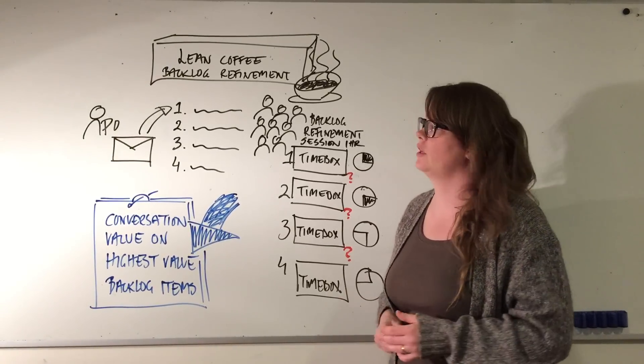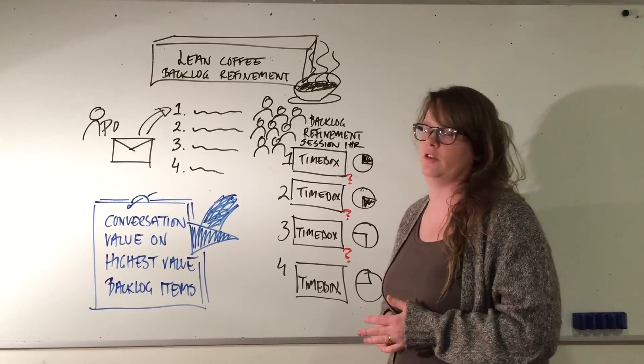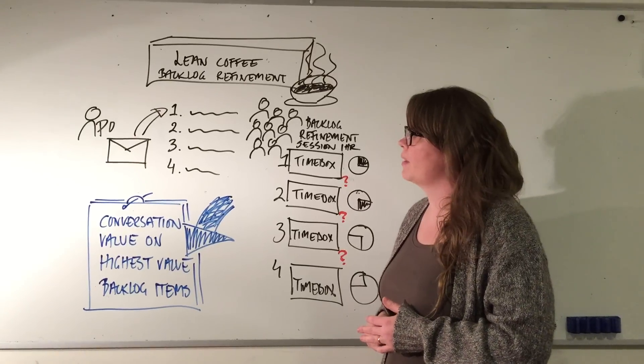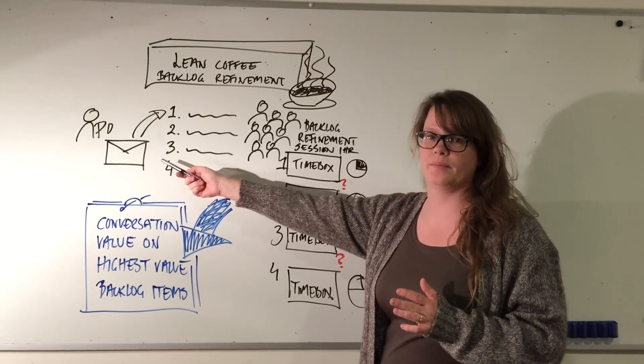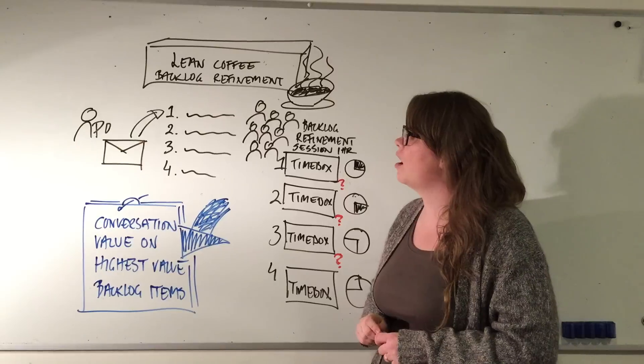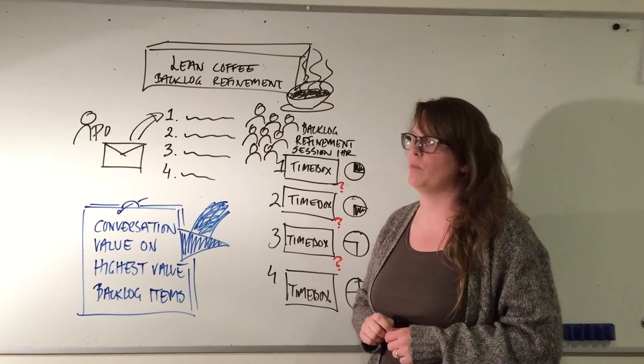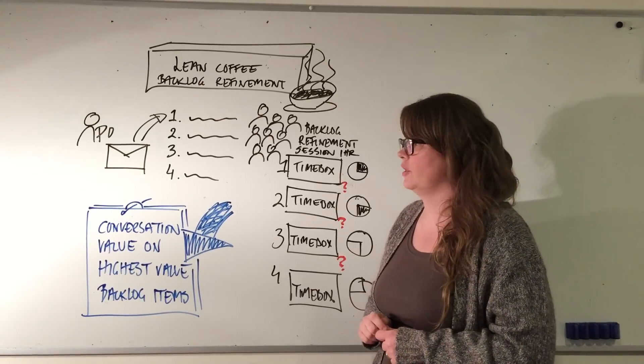The Lean Coffee Backlog Refinement session is basically a question of preparation. It's about the product owner creating a list of conversation topics that they want to bring into the backlog refinement session.